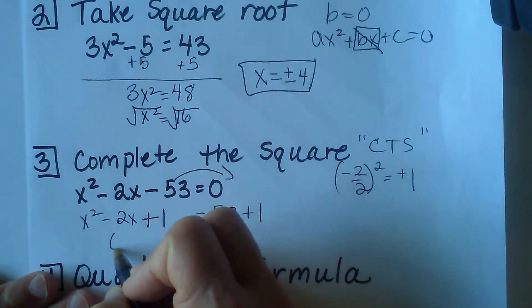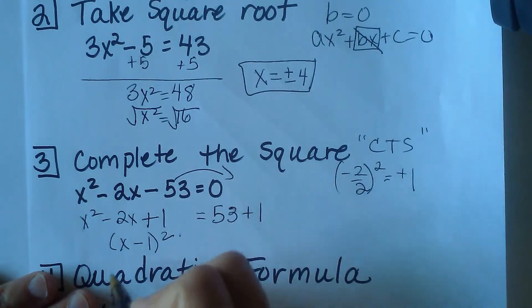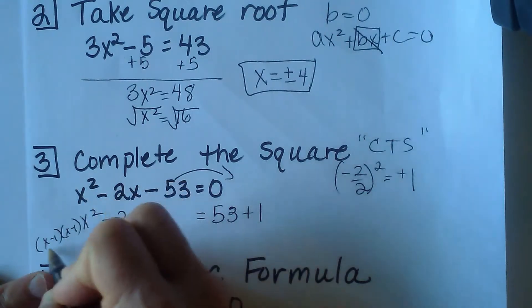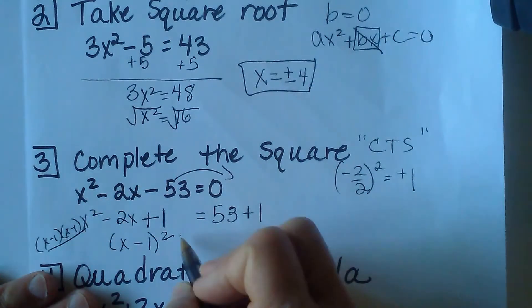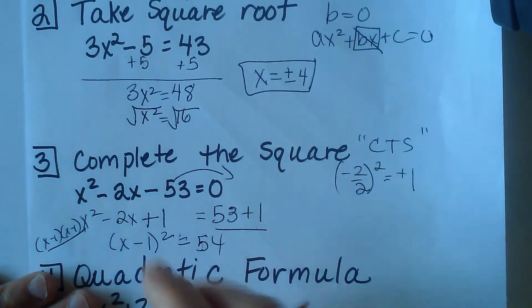Now what we've created is a perfect square trinomial. In other words, this is going to factor into x minus 1 quantity squared, which means x minus 1 times x minus 1. We're just going to write it as a perfect square. And that's going to equal 54.